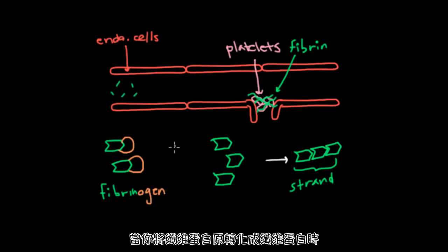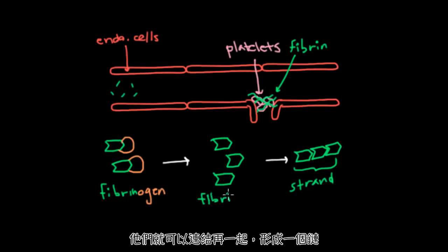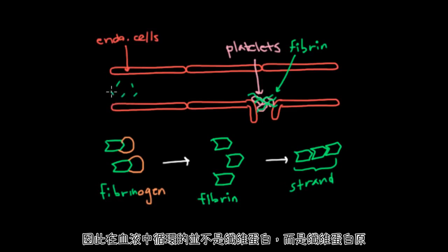And it's only when you convert fibrinogen to actual fibrin that the units can join together and form a strand. And so again, to repeat, you don't have fibrin circulating in your blood. You actually have fibrinogen.